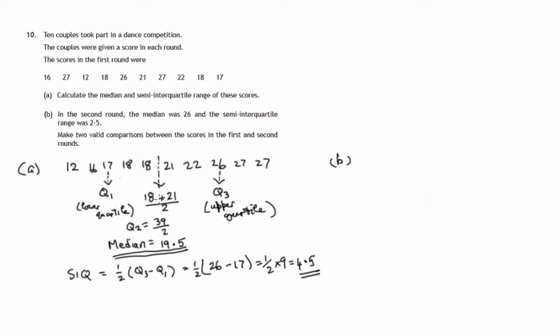Now comparisons between the first round scores and the second round scores. In the first round, we had a median of 19.5. In the second round, the median has increased to 26.